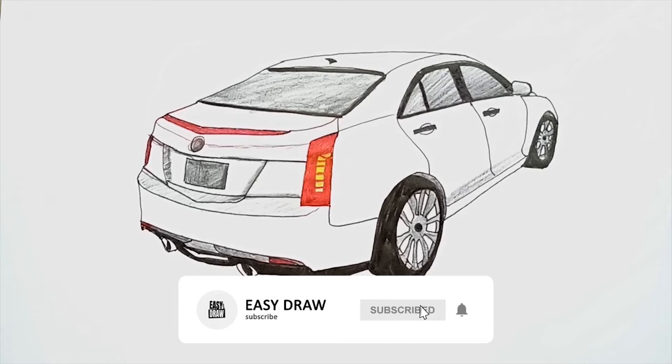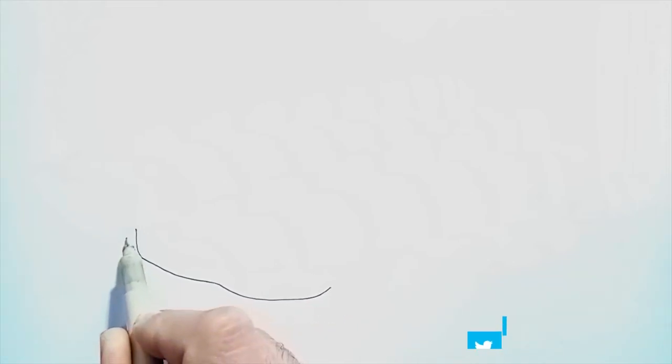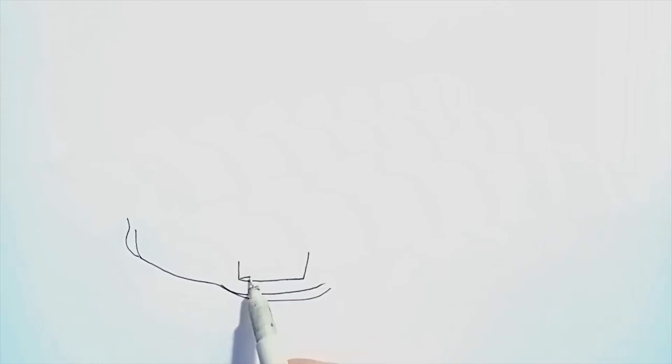Cadillac's prominent shield grille is more agile and athletic, featuring active grille shutters that close at certain highway speeds to reduce aerodynamic drag and enhance fuel economy. The center, high-mounted stop light on the rear decklid provides downforce to improve aerodynamic performance.